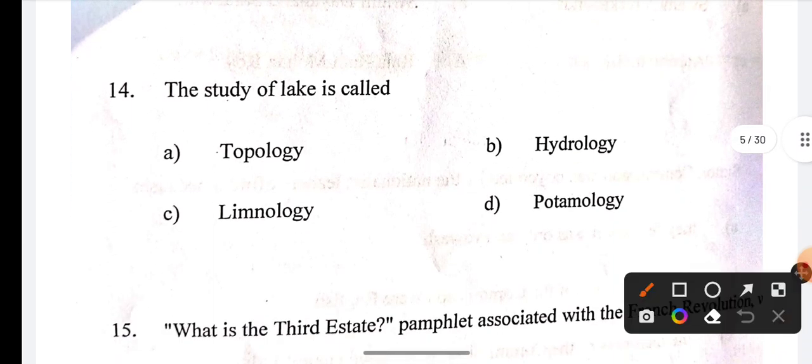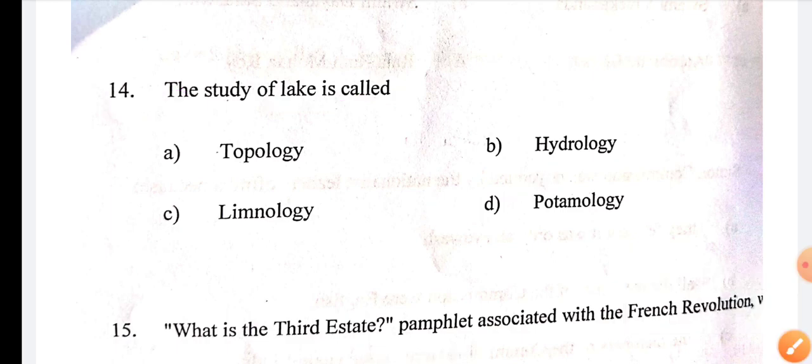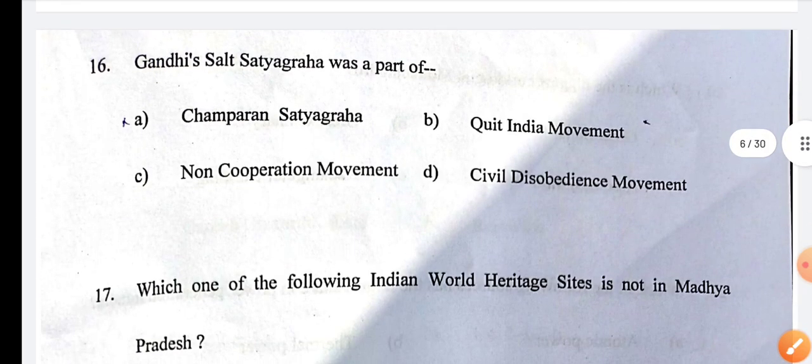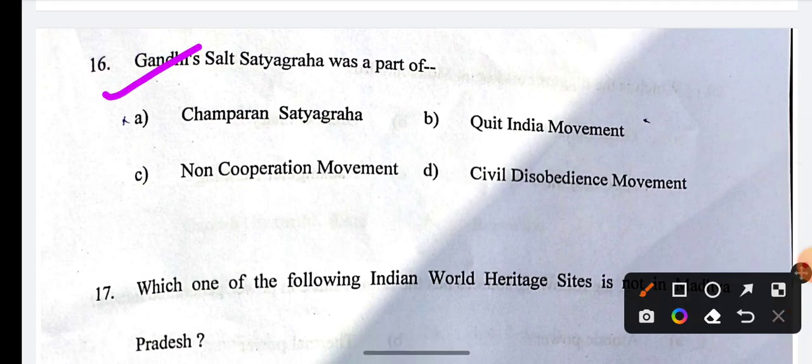Next question: The study of lakes is called? The correct answer is limnology. Question 15: What is the Third Estate was written by? The correct answer is Abbe Sieyes. Gandhi Ji's Satyagraha was part of? The answer for question 16 is civil disobedience.